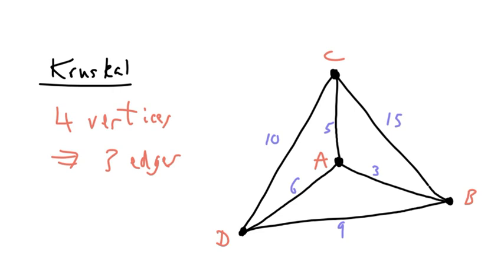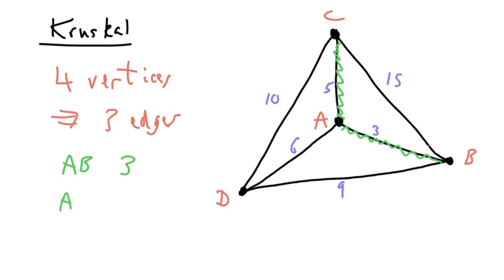That clearly is AB, so AB has a length of 3. Then find the next least edge, which here is 5. The key thing is make sure you don't complete a circuit.